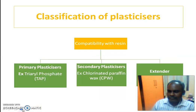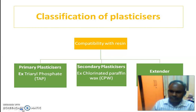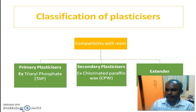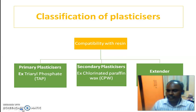The second classification is by compatibility with resin: primary plasticizers and secondary plasticizers. Primary plasticizers — for example, TAP (Tri-aryl Phosphate). Secondary plasticizers — for example, CPW (Chlorinated Paraffin Wax), used in PVC-type applications. There are also extenders, such as alloyed types.